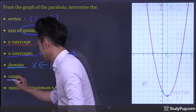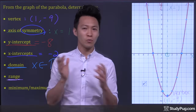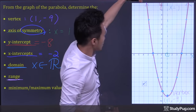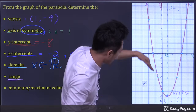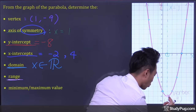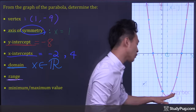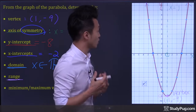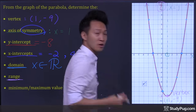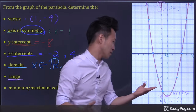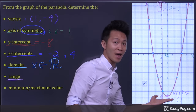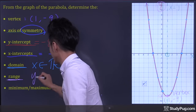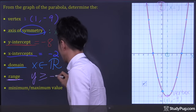Next, range. By definition, range is the set of y values for which a function is defined. So here, the parabola only goes as low as right here, where the y value is negative 9. However, it will go as high as it likes. Therefore, the range is y must be negative 9 and anything above — so the range is y is greater than or equal to negative 9.